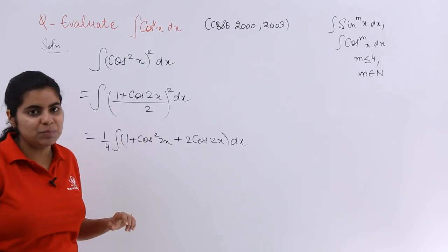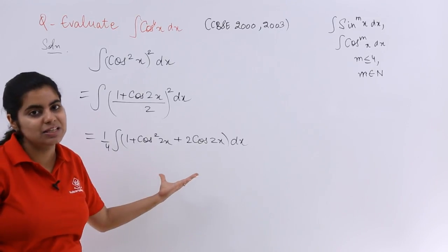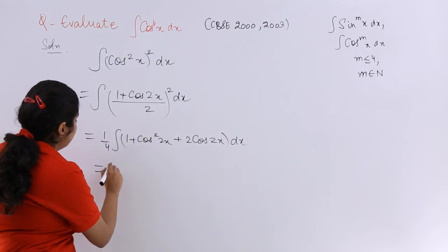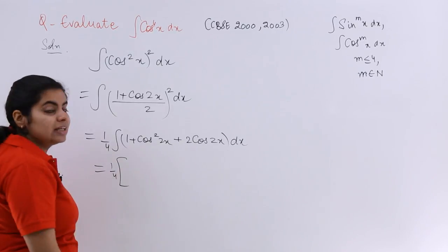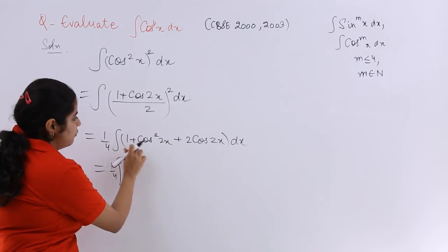Then what I have to do is just simply evaluate this given integral. So I know 1 by 4 is there outside.